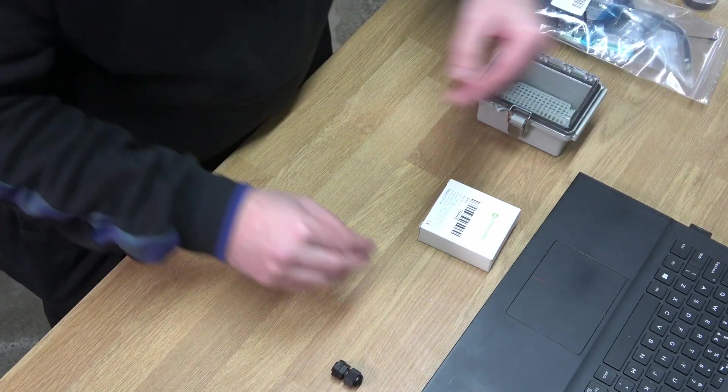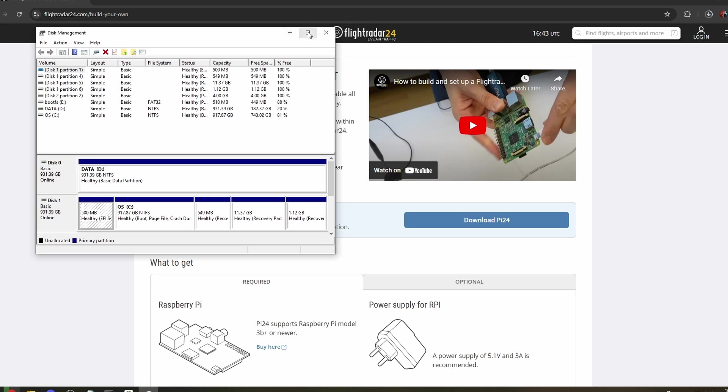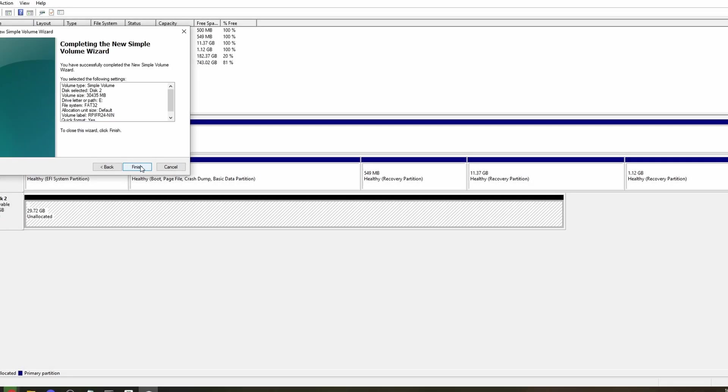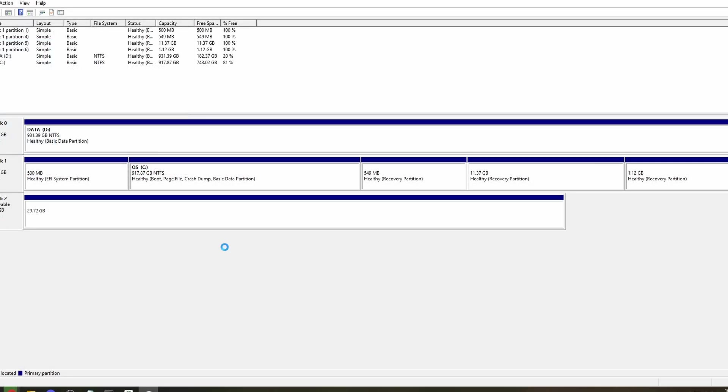And fire that into there. So an 8 gig card is probably the best for this, unfortunately 32 was the smallest I had so it's a bit of a waste. There we go, perform quick format and finish.